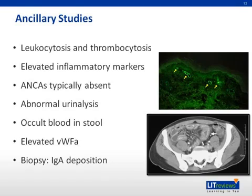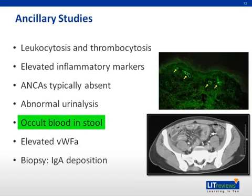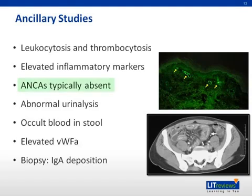The diagnosis of HSP is a clinical one, and the classification criteria previously discussed may help with the diagnosis. There are no diagnostic laboratory abnormalities for making the diagnosis of HSP. Patients may have elevated white blood cell and platelet counts, and elevated acute phase reactants. Occult blood is frequently found in stool specimens. Testing for autoantibodies is not useful except to exclude other disease, and antineutrophil cytoplasmic antibodies, or ANCAs, associated with other vasculitides are typically absent.